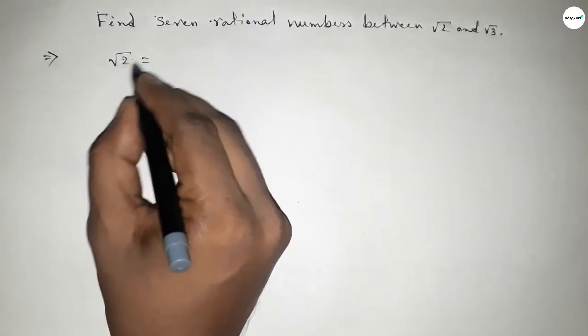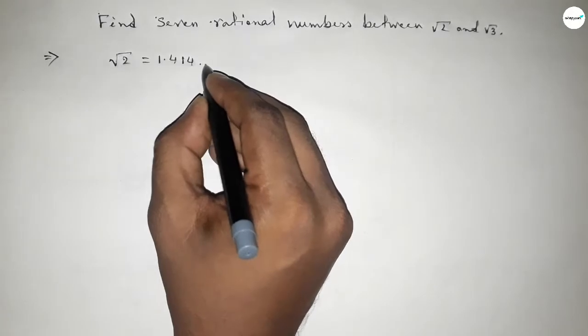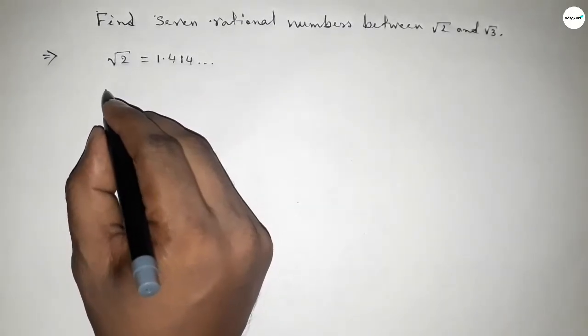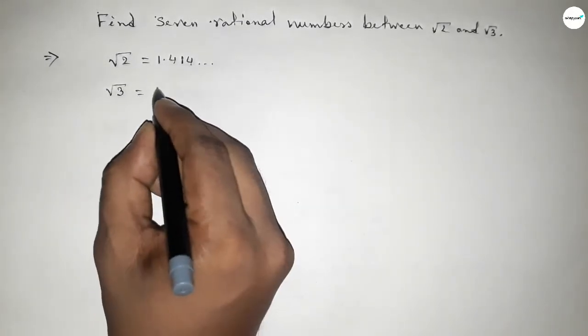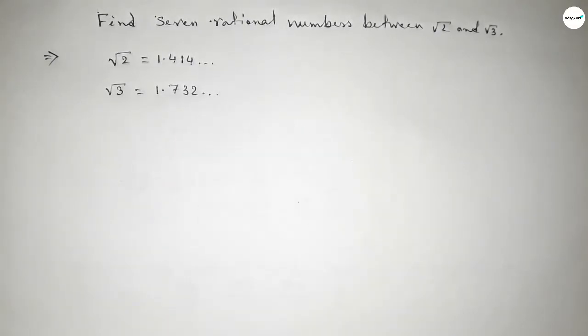We know that √2 equals 1.414 and continuous, and the value of √3 equals 1.732. If you don't know how to find out the value of √2 and √3, then please watch my video which I give in the i button.